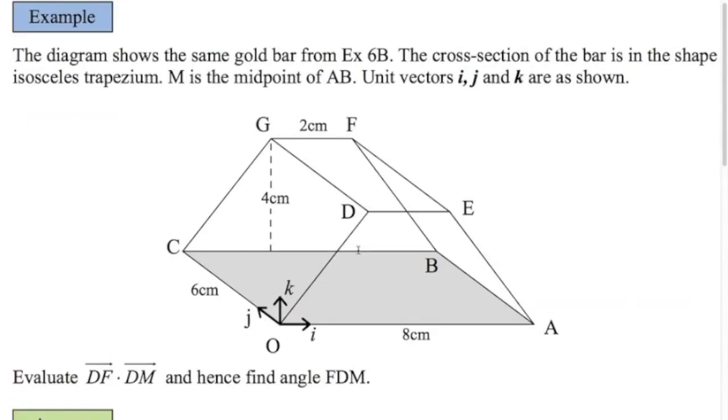Last example here on vectors. In the exam, you sometimes get one of these shapes. Here they define what i, j, and k are. They'll ask you to find how to get from d to c or g to e or something like that, and then ask to find the angle between the two vectors that you've found. So this is a classic question, just like you get in the exam. Evaluate df.dm and hence find the angle fdm.